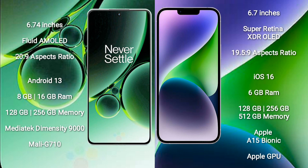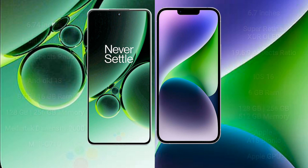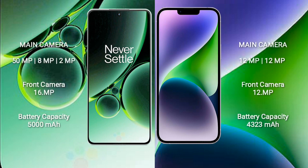OnePlus Nord 3 features a triple rear camera setup: 50MP plus 8MP plus 2MP, and a 16MP front camera. iPhone 14 Plus features a dual rear camera setup: 12MP plus 12MP, and a 12MP front camera.